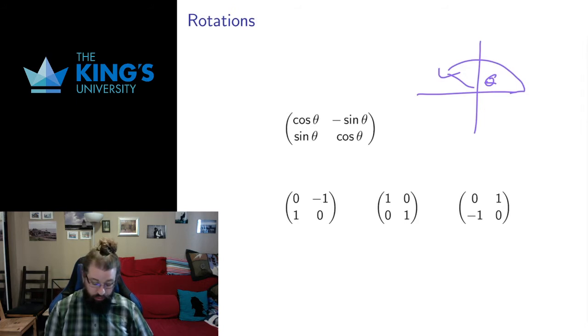The rotation by an angle theta has the general form given by the matrix with entries cos theta minus sine theta, sine theta, and cos theta. I've given you some special examples here.